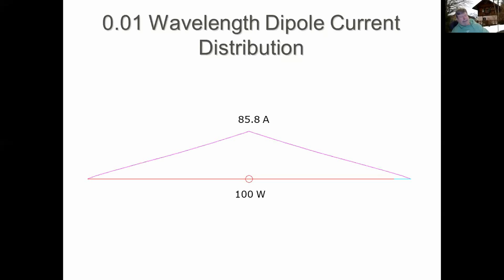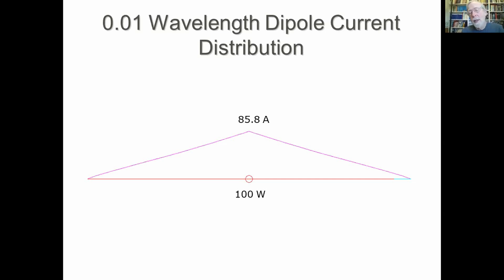You can tell that by the fact that you've got 85 amps flowing — that indicates a very low radiation resistance. You have to match that, which is another job for the matching network, and that matching network is going to have some loss.